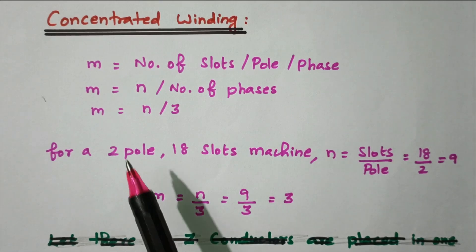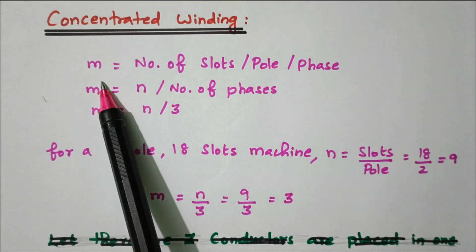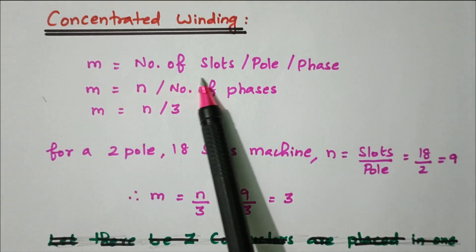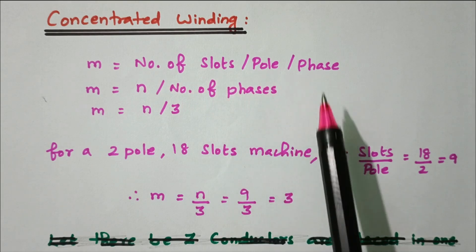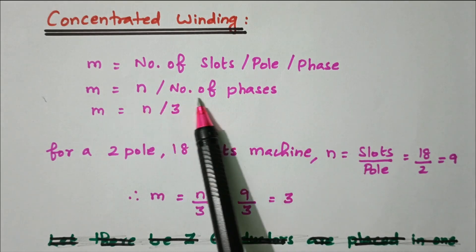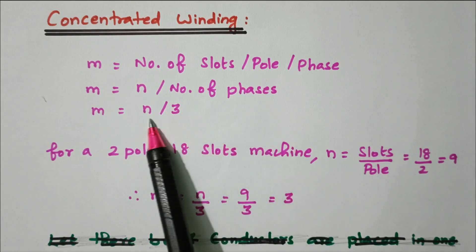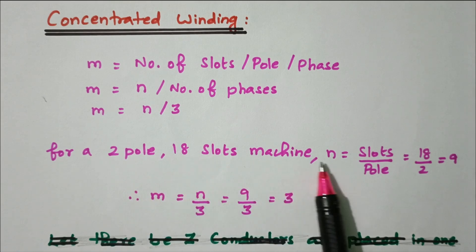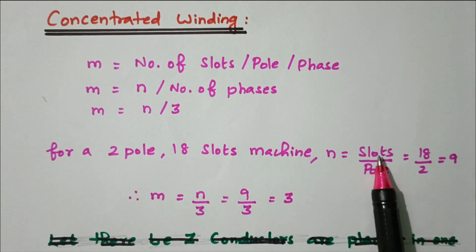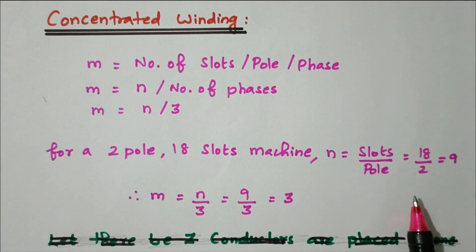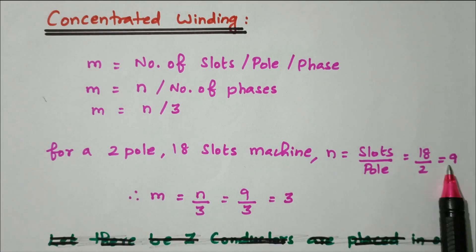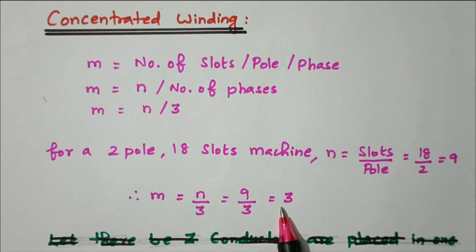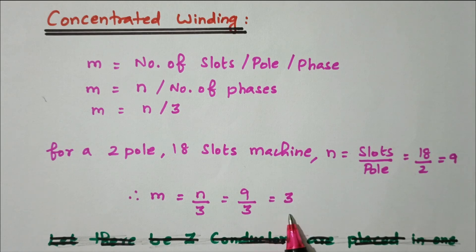Now we'll go to concentrated and distributed winding. First, some notations: m equals the number of slots per pole per phase, which is n divided by 3. For a 2-pole, 18-slot machine: n equals slots per pole = 18 divided by 2 = 9. So m equals 9 divided by 3 = 3. The number of slots per pole per phase is 3.